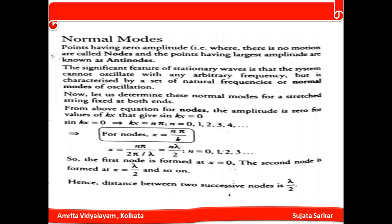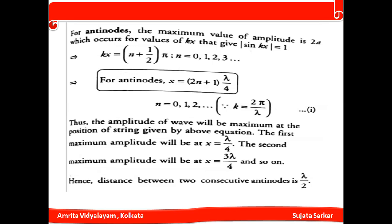For antinodes, the maximum amplitude 2A occurs for values of kx that give |sin(kx)| = 1, so kx = (n + ½)π, where n = 0, 1, 2, 3, ... This gives x = (2n + 1)λ/4. The antinode positions are at x = λ/4, x = 3λ/4, and so on. The distance between two consecutive antinodes is λ/2.